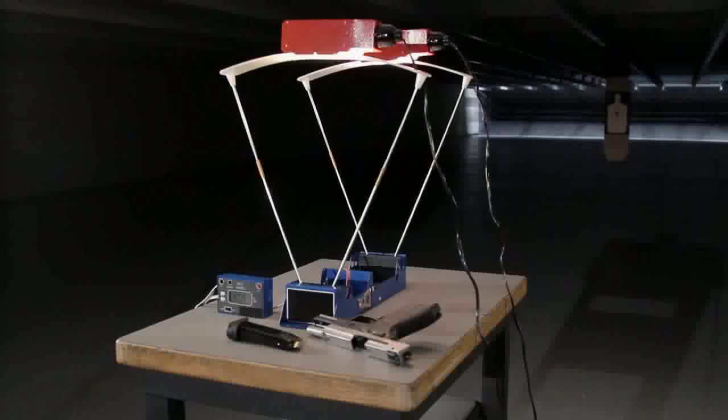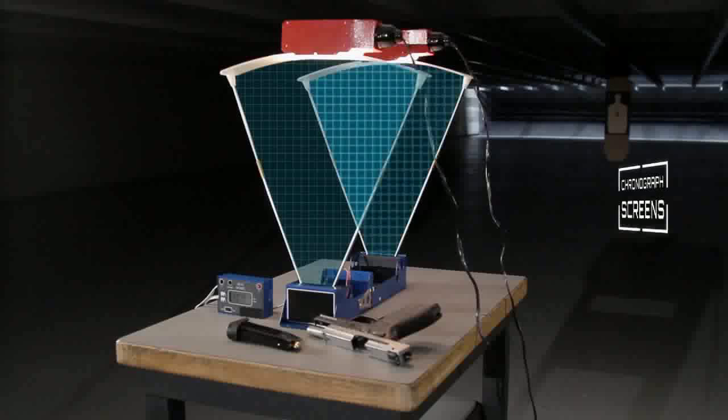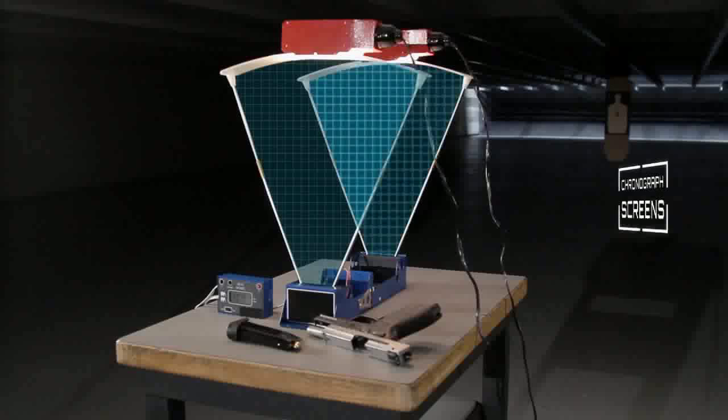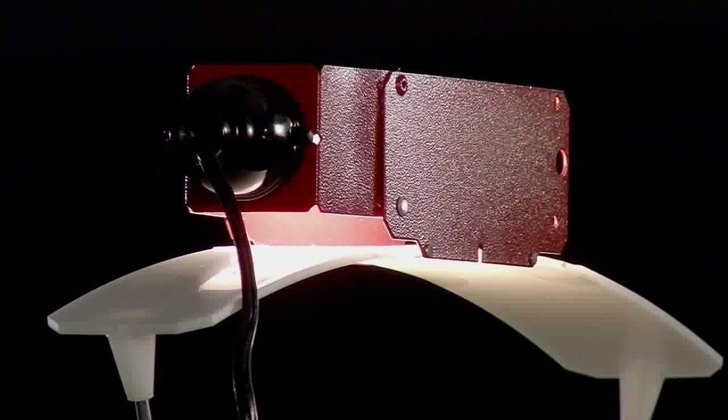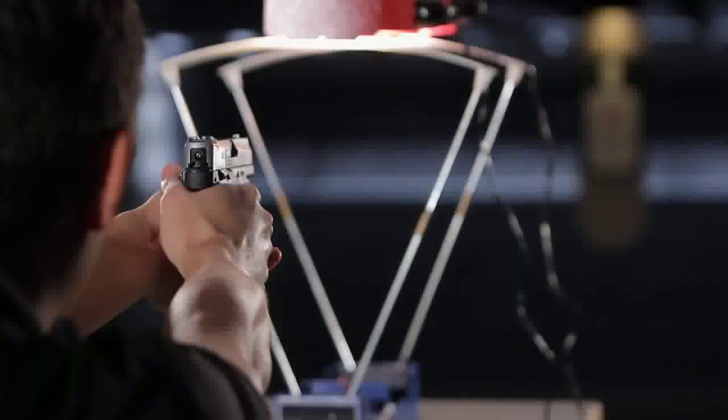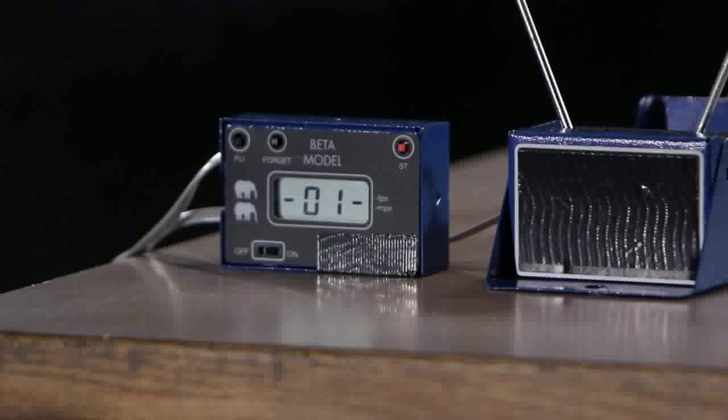Present-day chronographs consist of two sensing areas known as chronograph screens. Each chronograph screen contains an optical sensor that detects the movement of the bullet using light. The bullet is fired through both screens, and the chronograph measures the time it takes the bullet to travel the distance between the screens, determining its speed.